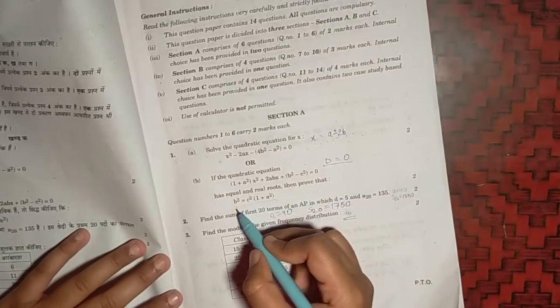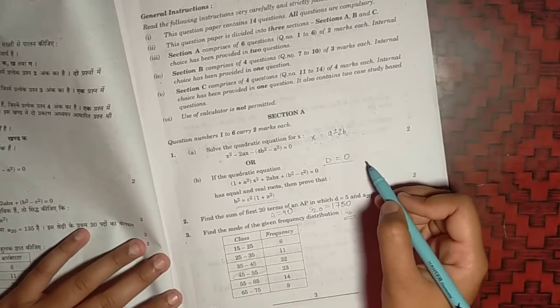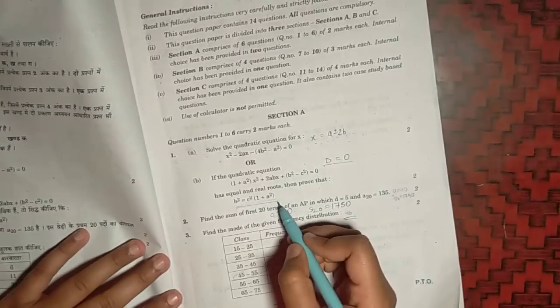Second question, we have to prove this. So we can prove this by taking D equals to 0, that is B squared minus 4AC will be equal to 0, and then we will get this.